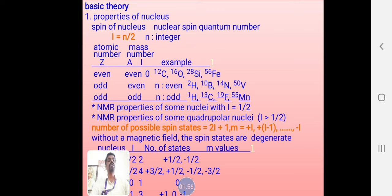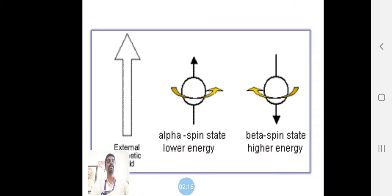The number of possible spin states will vary based on 2I + 1. We see m = +1 to -1. Without a magnetic field, the spin states are degenerate. In some states, we have fractions, so it's possible to get NMR signals.